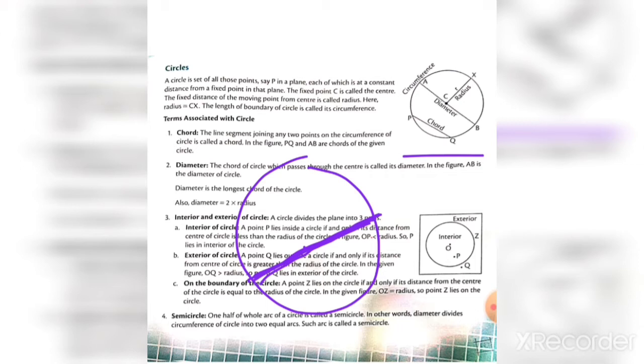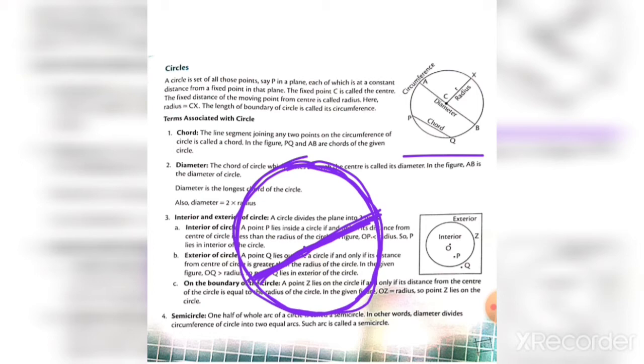The line segment joining two points on the circumference is called a chord. Now, what is circumference? The curve boundary of the circle is called circumference, but for a polygon it is called perimeter. So when we join two points on the circumference of a circle by a line segment, we get a chord. The largest chord is when the chord passes through the center.